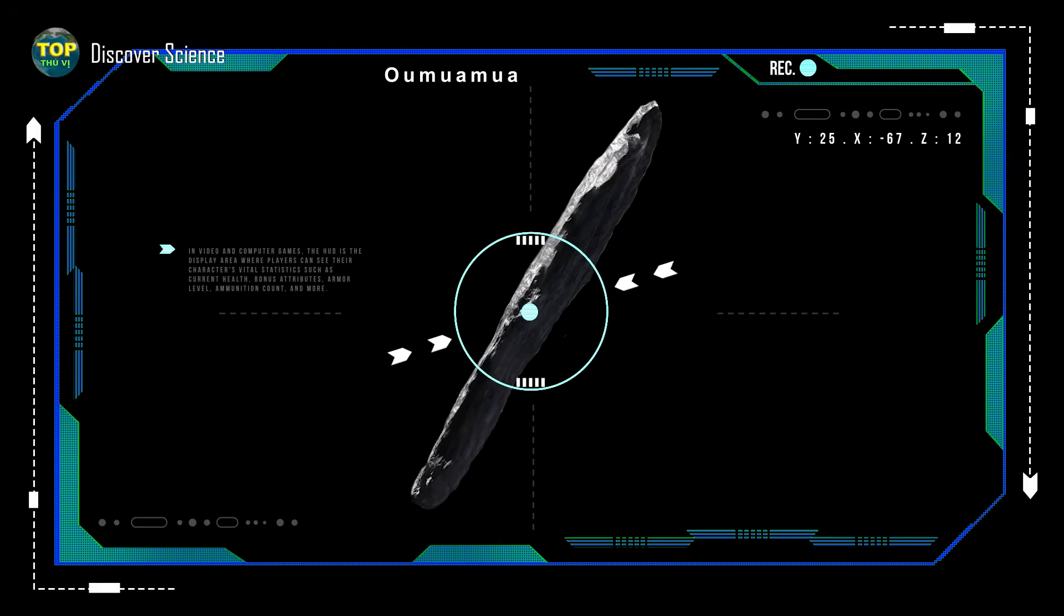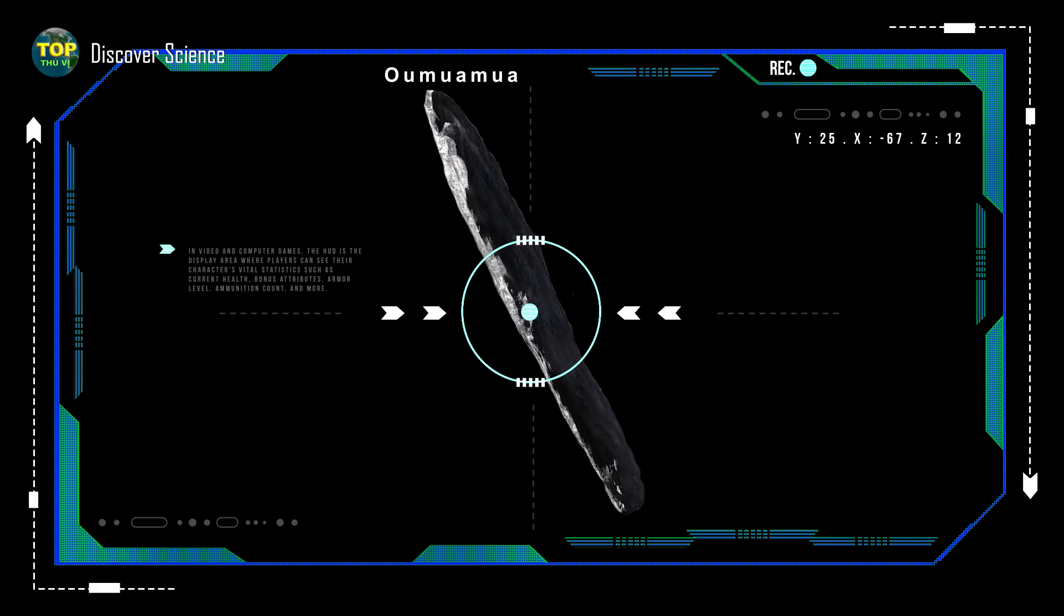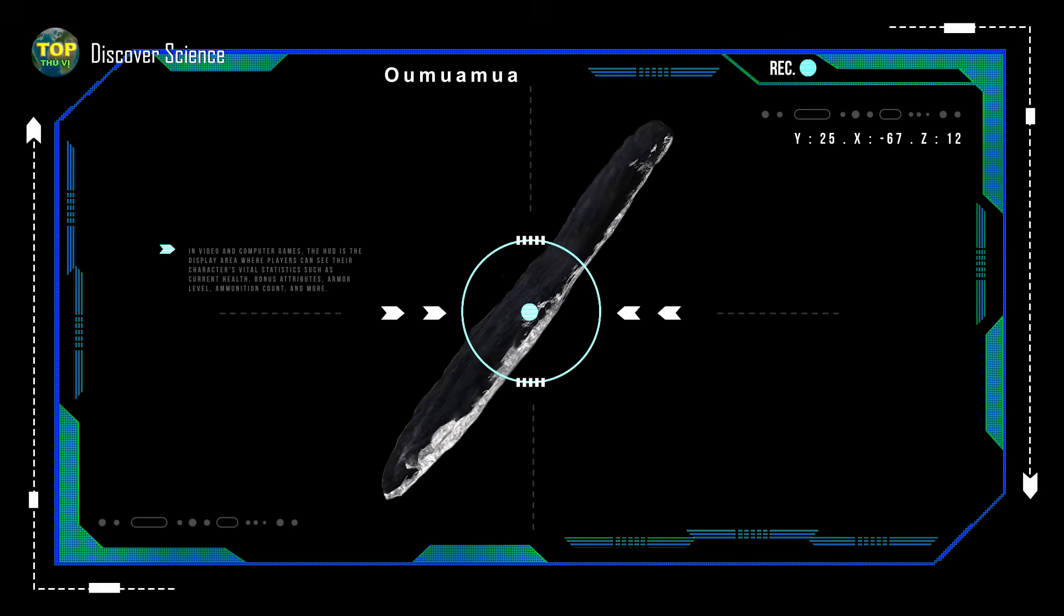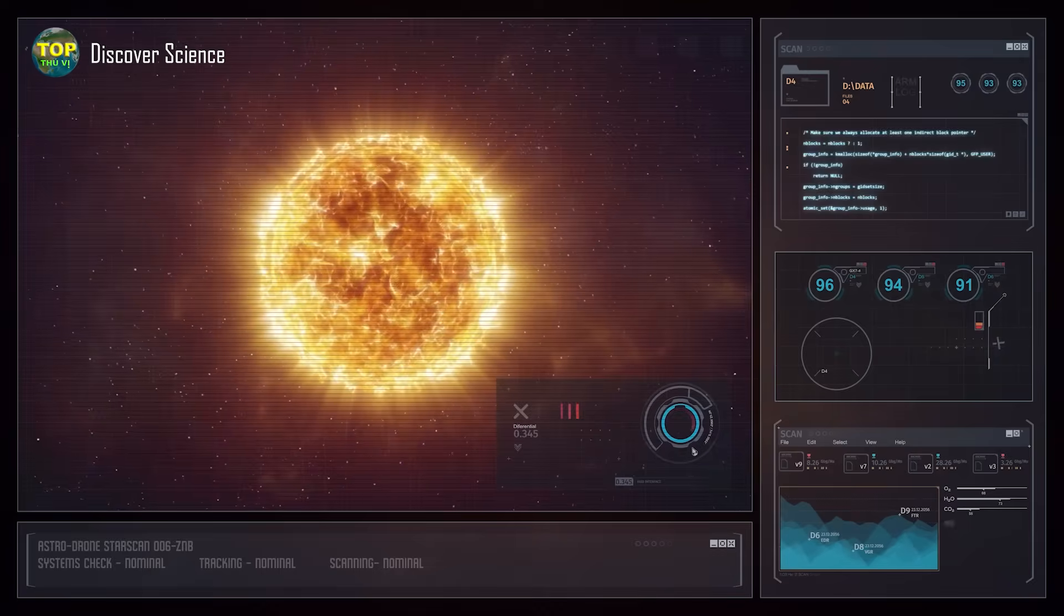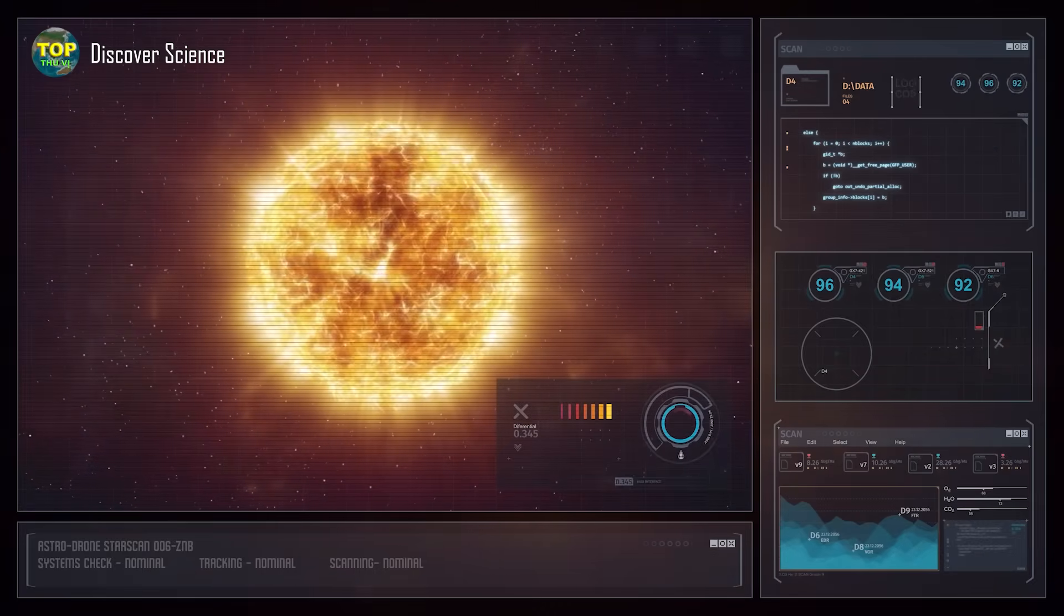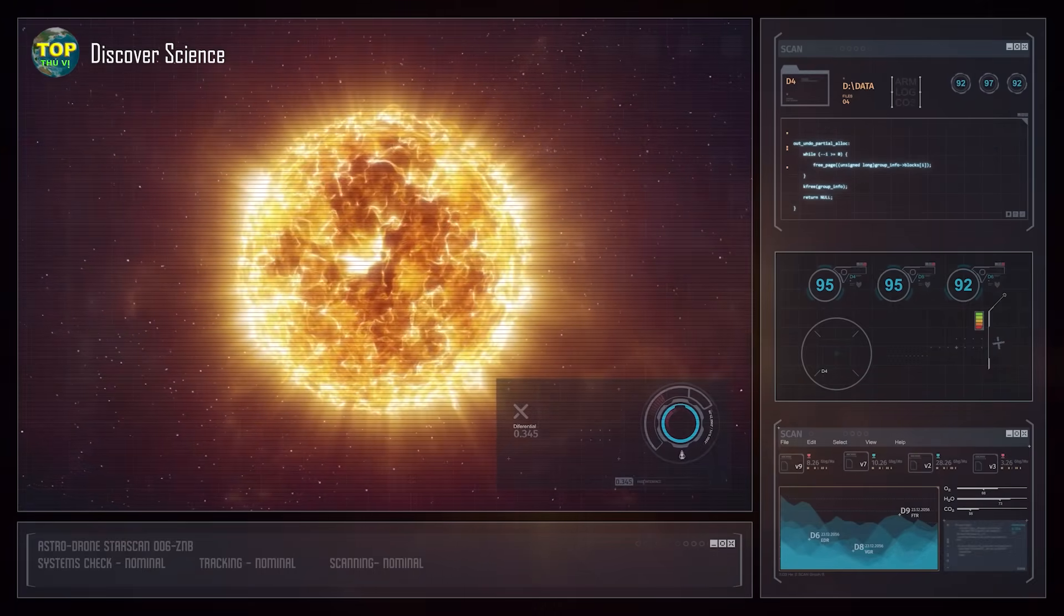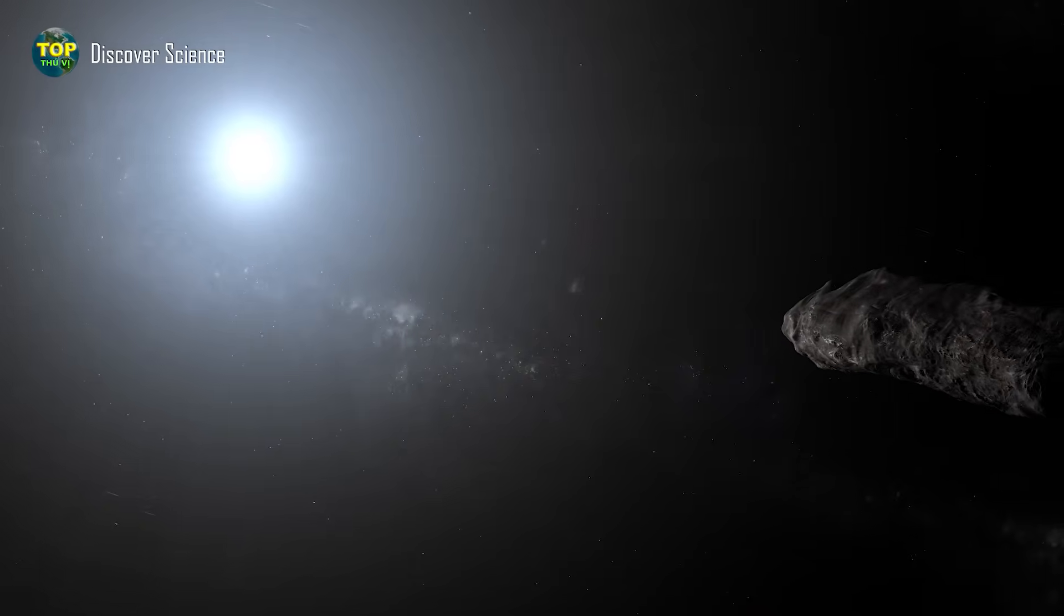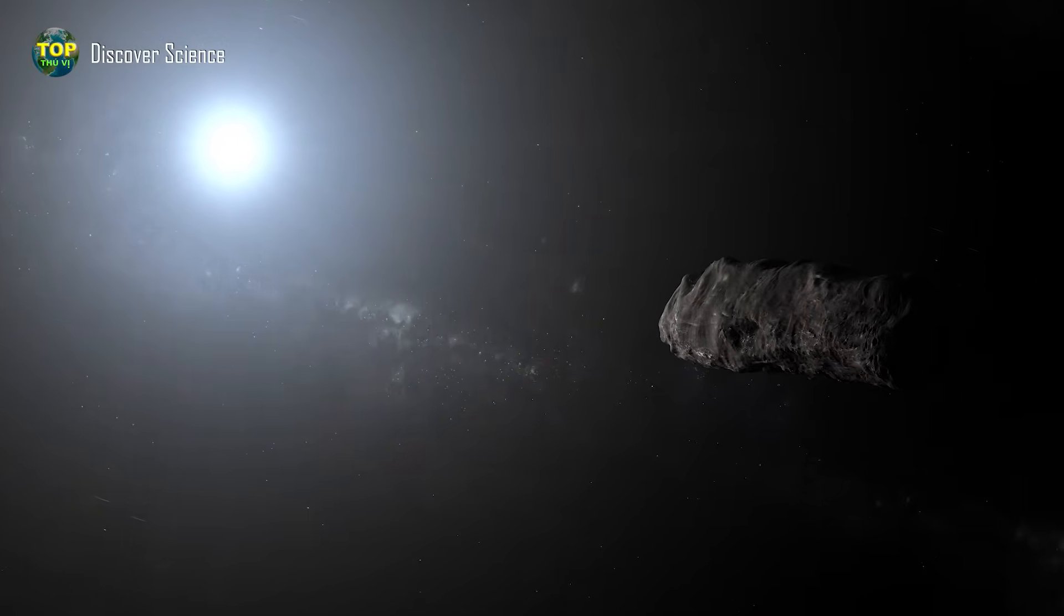For many years, scientists have been trying to find an explanation for this strange acceleration. It seems that solar wind isn't the cause. While it's true that particles ejected from the sun can create solar winds which can push objects in space, the force exerted by solar winds is very weak, insufficient to accelerate 'Oumuamua.